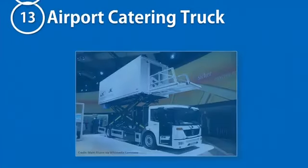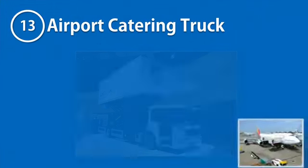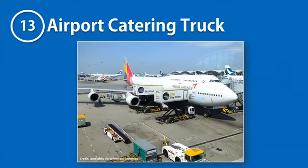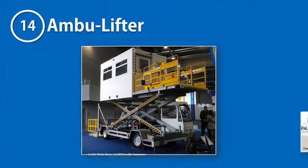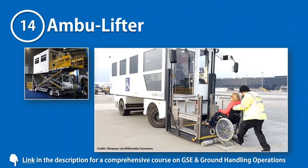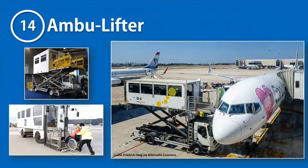An airport catering truck is another important ground support equipment. It is a truck with a height-adjustable container that stores flight catering supplies, bringing them from the flight kitchen and loading them onto the aircraft. A ground support equipment similar in design to an aircraft catering truck is an Ambulifter, a short form of ambulance and lifter. It is used for transporting wheelchair passengers, stretcher passengers, or any other physically challenged passengers into the aircraft.